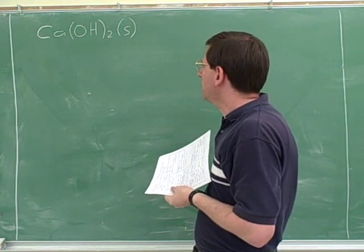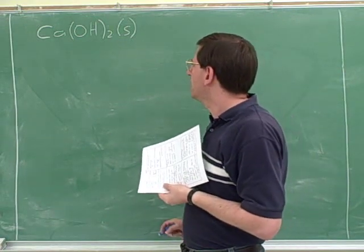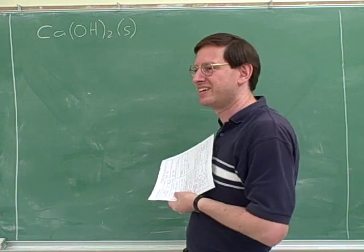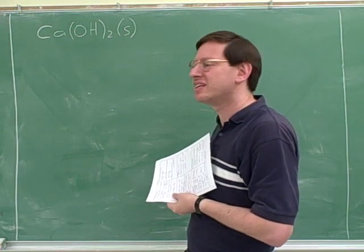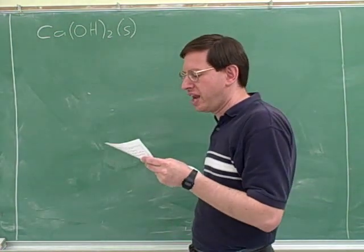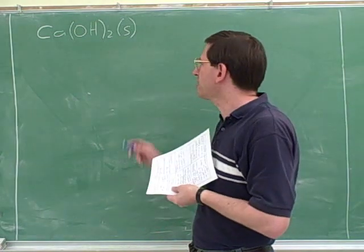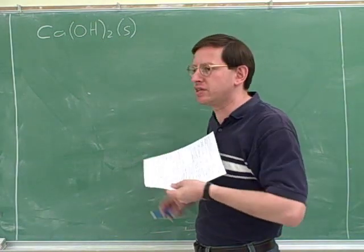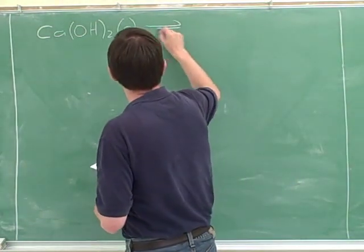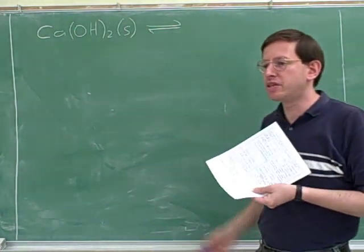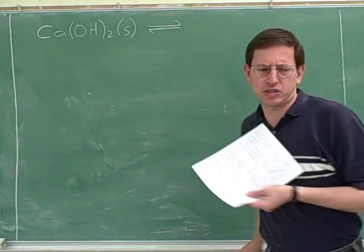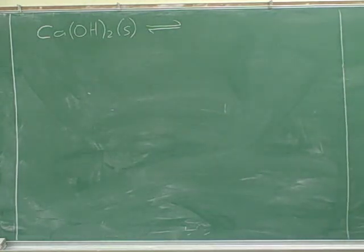Let's think about this compound. Do you remember what this symbol means? Solid — so that means this is in solid form. And now we're going to ask: what would happen if we put this in water? Well, if we put this in water, it can dissolve. So let's suppose that this is going to dissolve. Try writing what the products would be if that dissolves.